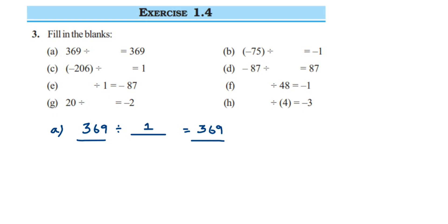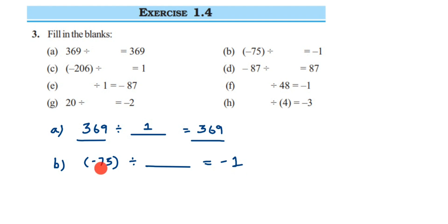The second question: -75 divided by what number gives -1. We know we get 1 when we divide a number by itself. Here we have -75 and the final answer also has a minus sign, which means we divide by a positive number. So it will be positive 75 — we divide by the same number but it has to be positive.